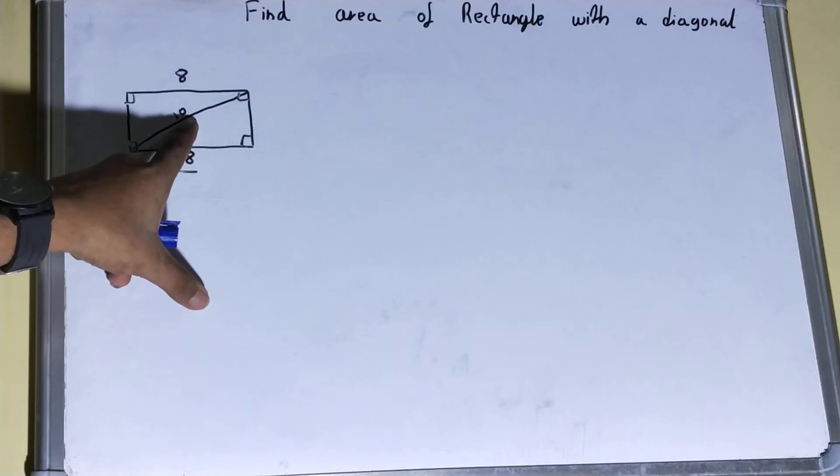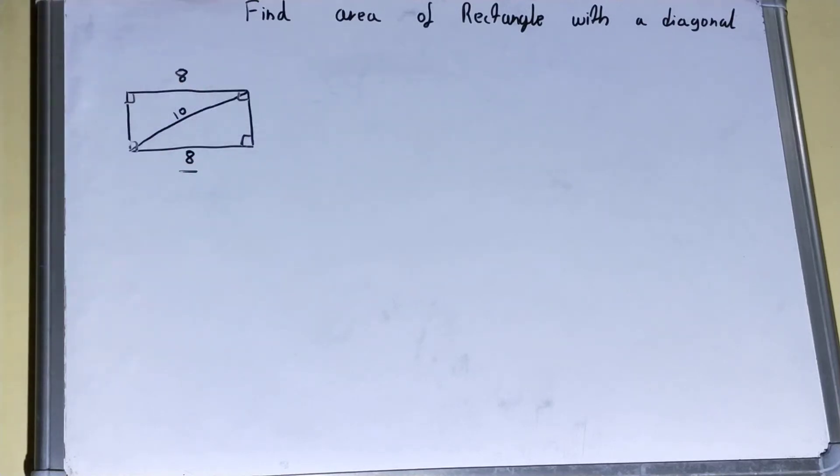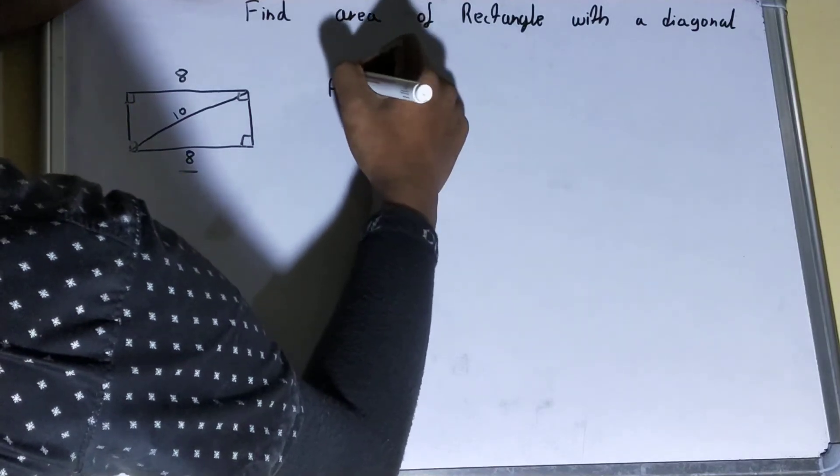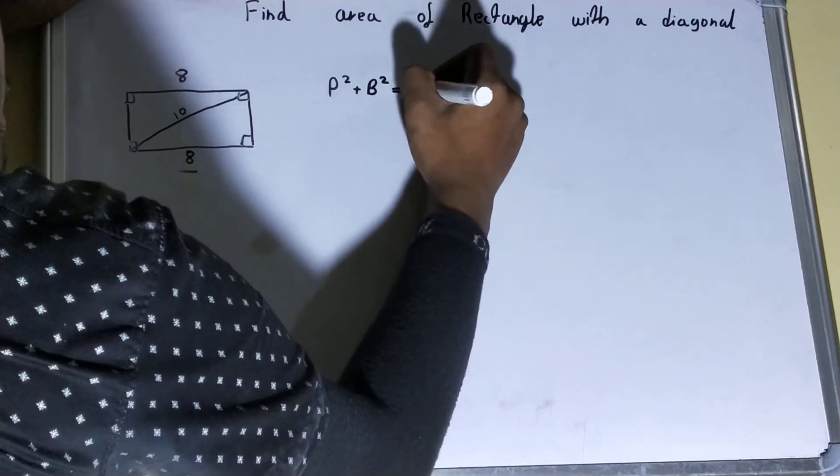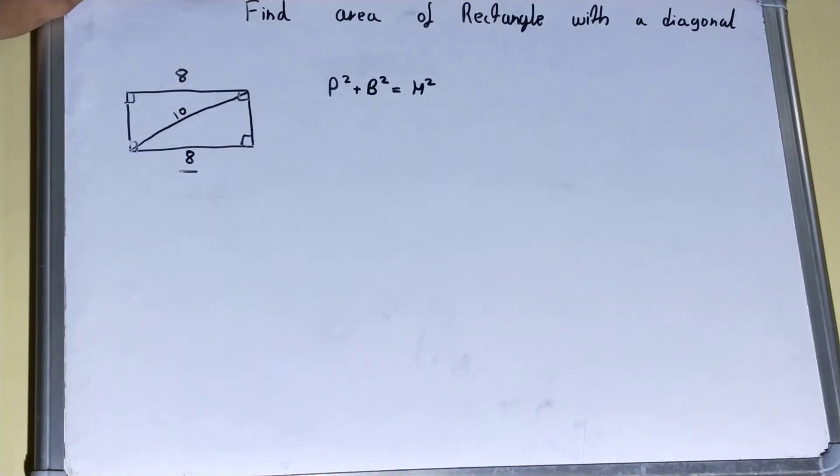Now if you'll notice this, then you have one side, you have the hypotenuse or the diagonal, and you have to find the other side. So we can just use the Pythagoras theorem, that is p squared plus b squared equals h squared.